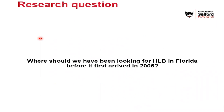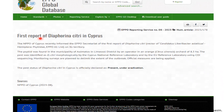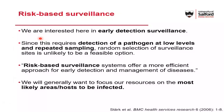So what I'm really looking at is this question: where should we have been looking for Huanglongbing in Florida before it first arrived back in 2005? It's quite a prescient question given that the vector — although not the pathogen, fingers crossed — has recently been detected for the first time in the EU in Cyprus. So back before 2005, Florida was well aware there was a risk of Huanglongbing and they wanted to be able to detect it at an early stage if it arrived. What we're looking at is what I'm going to call early detection surveillance.